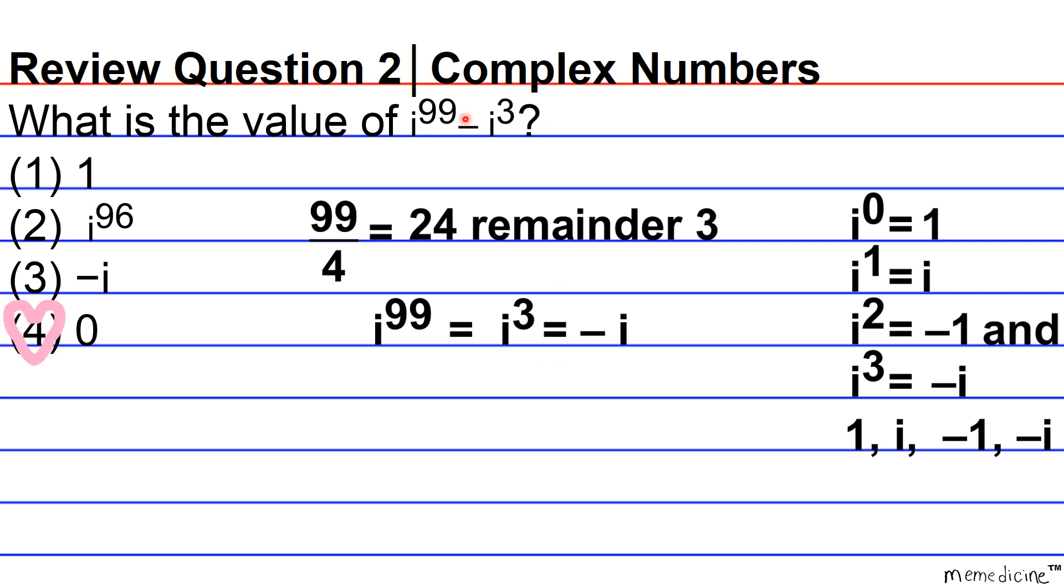Therefore, our final solution is going to be answer choice 4 because we have that i to 99 minus i to the third is simply negative i minus negative i, or zero.